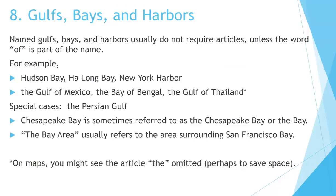Number 8: Gulfs, Bays, and Harbors. Named gulfs, bays, and harbors usually do not require articles unless the word of is part of the name. For example: Hudson Bay, Halong Bay, New York Harbor — no article. The Gulf of Mexico, The Bay of Bengal, The Gulf of Thailand — article required. Special cases: The Persian Gulf. Chesapeake Bay is sometimes referred to as THE Chesapeake Bay or THE Bay. The Bay Area usually refers to the area surrounding San Francisco Bay. On maps, you might see the article THE omitted, perhaps to save space.